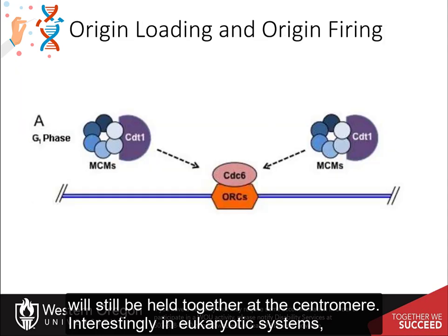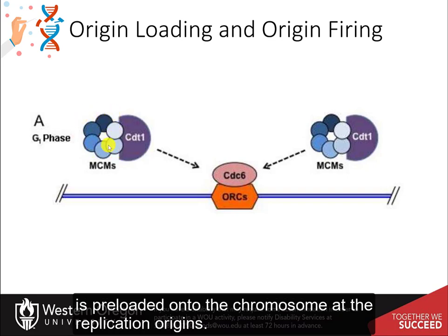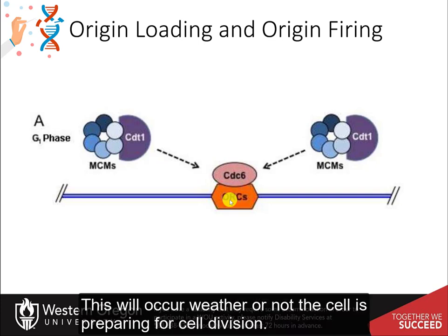Interestingly, in eukaryotic systems, the helicase enzymes — or the MCM complex, as it's called — are preloaded onto the chromosome at the replication origins. This process is known as origin loading, and it will occur whether or not the cell is preparing for cell division.